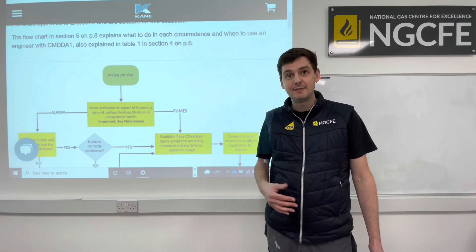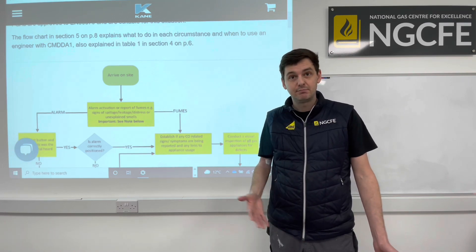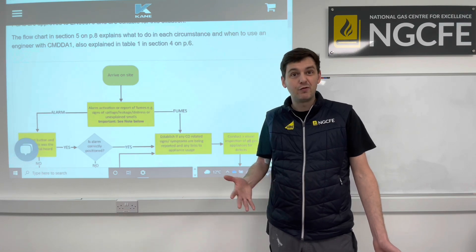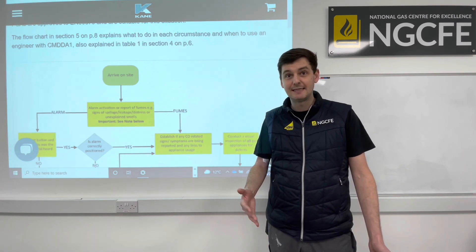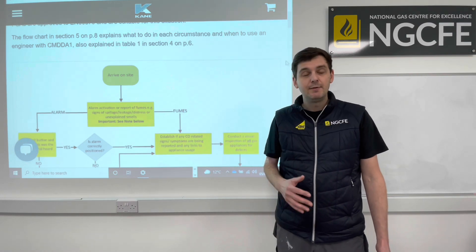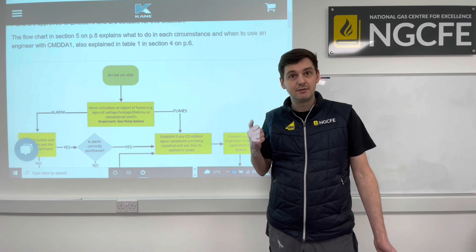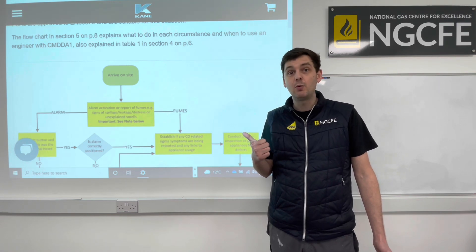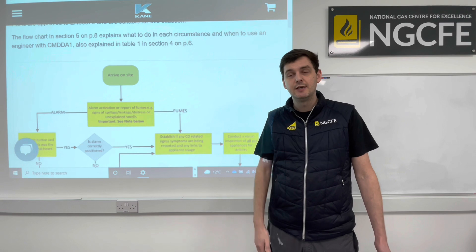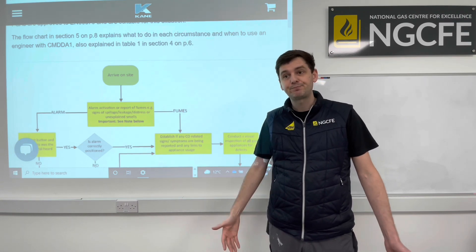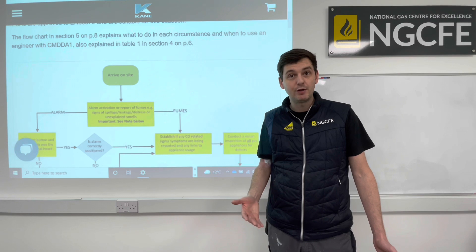This engineer didn't have CMDDA1 or any other relevant testing qualification — he was your average engineer. His competency would extend to Core and FGAS basically, so he had his CEMWAT and CCM1, but he didn't have anything beyond that in terms of CMDDA1 or above. This raised the question: what should an engineer do in that situation? What's the correct procedure if you've got a customer who's called because a CO alarm has operated, or maybe there's been a report of fumes — the customer feels dizzy, drowsy, nauseous and might suspect CO poisoning? Customers generally don't know there are engineers out there with the relevant competencies for CMDDA1 etc.